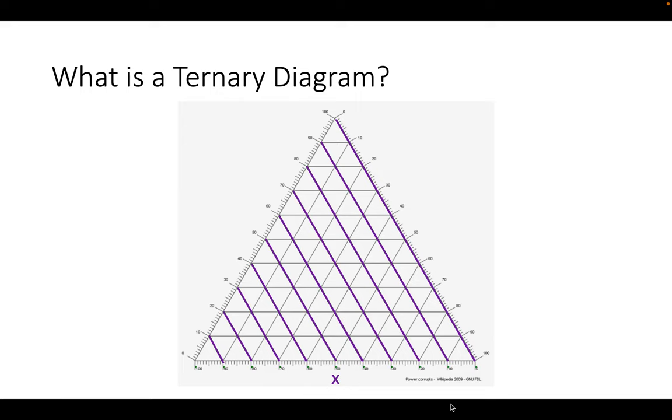The left side of the triangle will be percentage of variable y with 0% at the bottom and 100% at the top. The percent lines for this variable run horizontally.